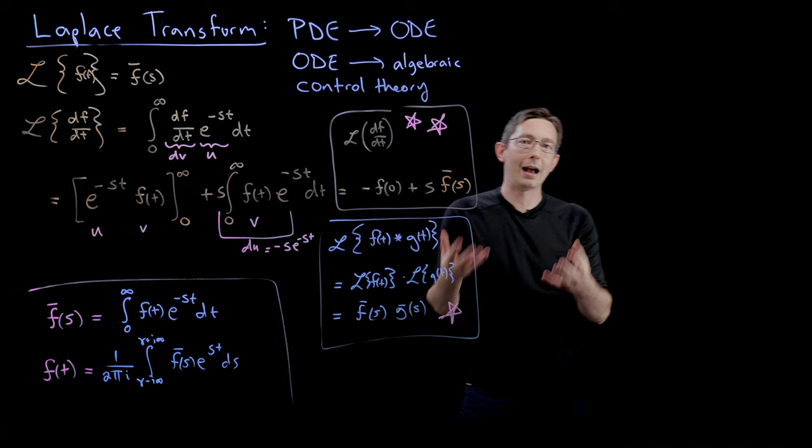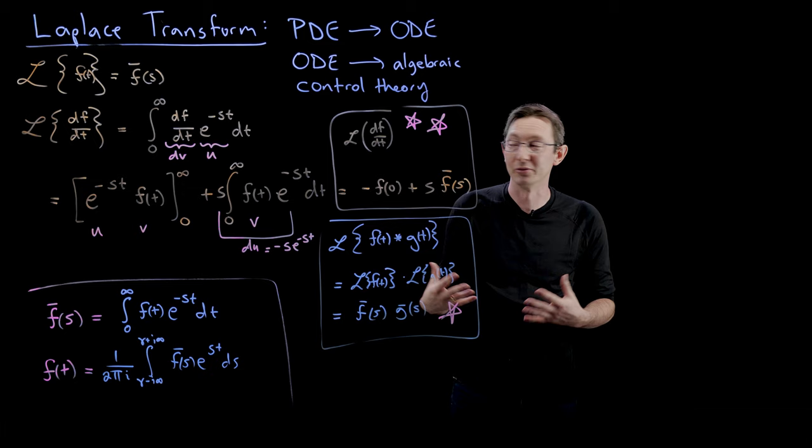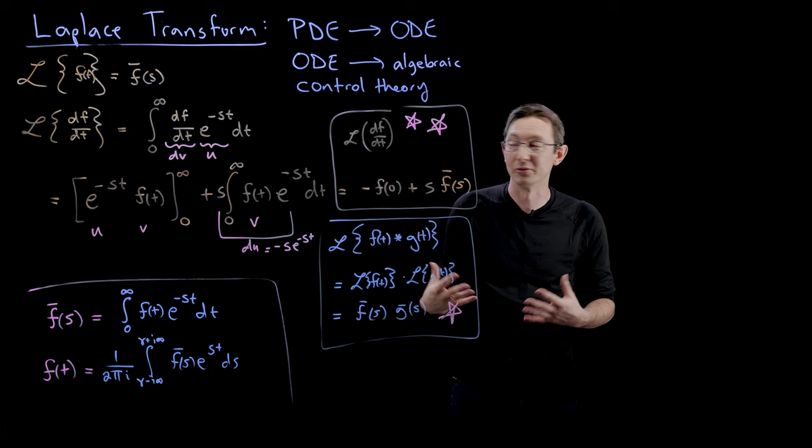This convolution-to-product property is really useful in control theory — this is how we handle transfer functions. It's very useful for solving PDEs and ODEs. I'll show you how to use these properties for PDEs and ODEs in the next video. For now, I'm going to walk you through some homework-style examples: compute the Laplace transform of this function or that function, since a lot of you have asked for those kinds of problems.